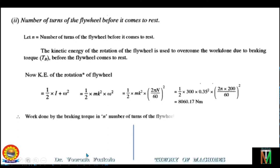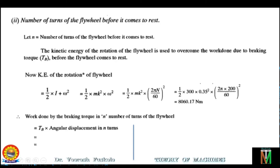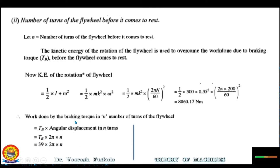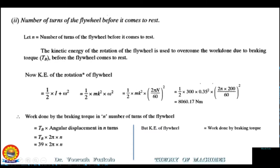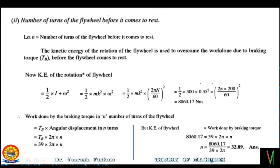The work done by the braking torque in N number of turns is Tb × angular displacement = Tb × 2πN. Putting the value of Tb = 39 Nm, work done = 39 × 2πN. Equating kinetic energy to work done by braking torque: 8060.17 = 39 × 2πN. This gives N = 32.89. Therefore the number of turns of the flywheel before it comes to rest is 32.89.